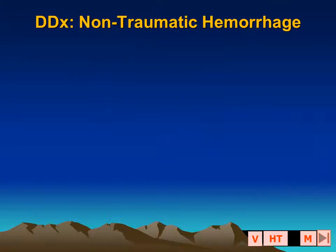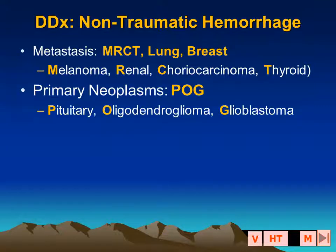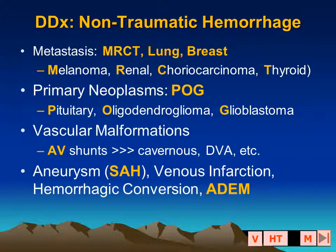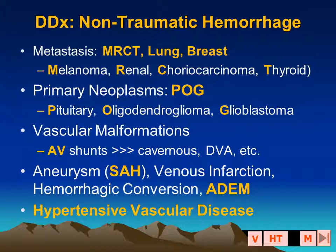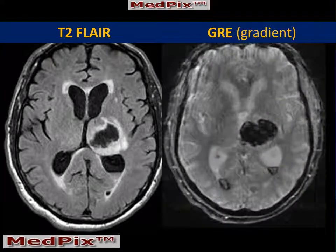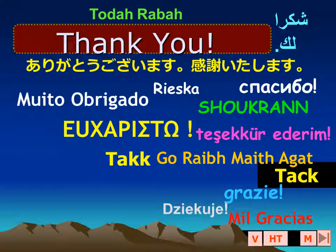When we have a non-traumatic hemorrhage, we always think about the diagnostic differential possibilities, including metastatic disease, primary neurologic neoplasms, vascular malformations, or subarachnoid hemorrhage. Remember that acute disseminated encephalomyelitis may also become hemorrhagic. But in this particular case, we had a patient with hypertensive small vessel disease. This has been the MedPICS Case of the Week — a patient with hypertension and a spontaneous hematoma involving the thalamus and the posterior limb of the internal capsule. To obtain CME credit, please visit the MedPICS website. I'm Jim Smyrniatopoulos, and I approve this message. Thank you very much for your kind attention.